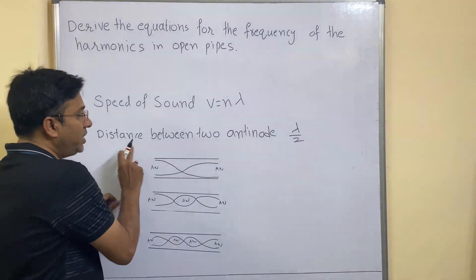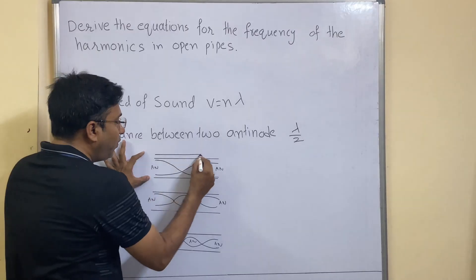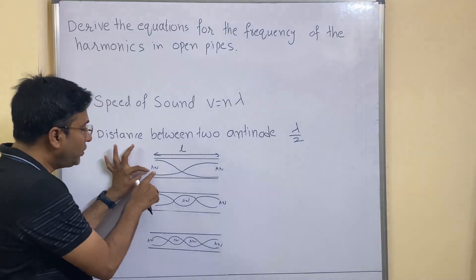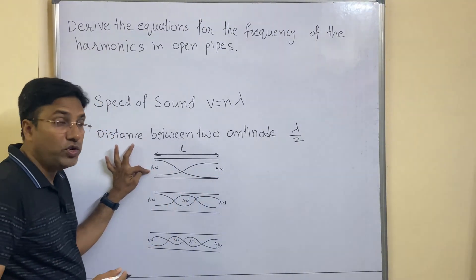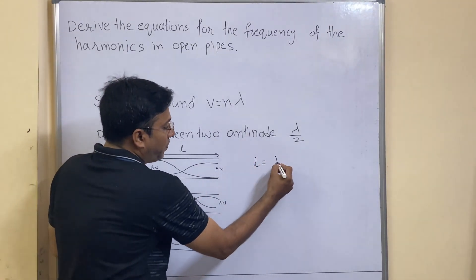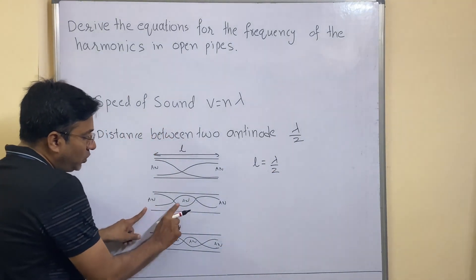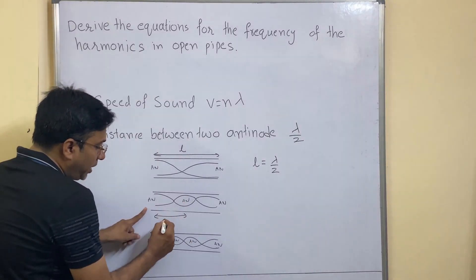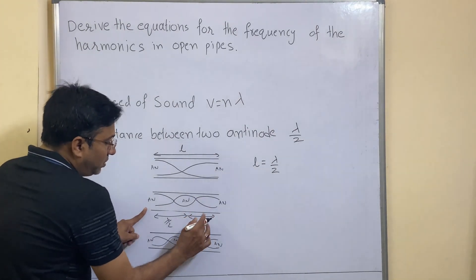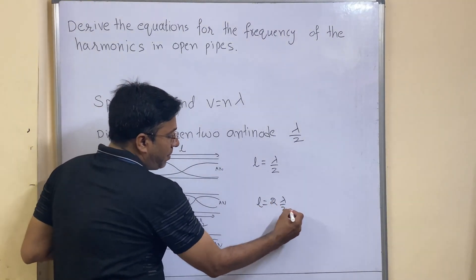The distance between two antinodes is lambda by 2. In the first pipe, the total length of the pipe is represented by L, and this length is equal to the distance between two antinodes, which is lambda by 2. So for the first pipe, L is equal to lambda by 2. In the second pipe, there are three antinodes: from antinode to antinode is lambda by 2, and from the next antinode to the next is also lambda by 2, making the total length two lambda by 2. So for the second pipe, L is equal to two lambda by 2.